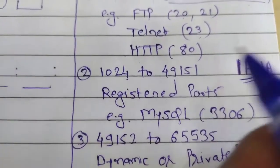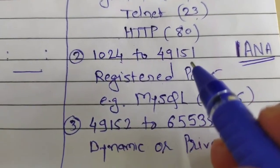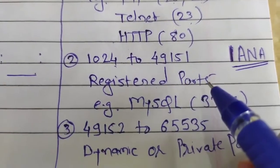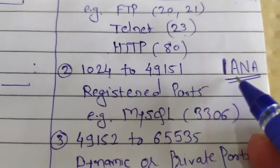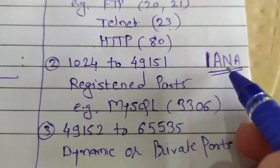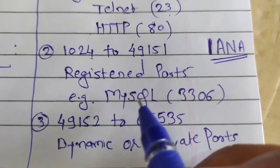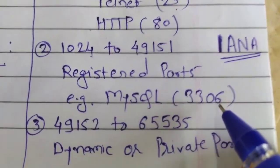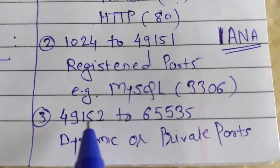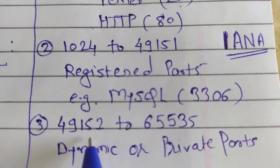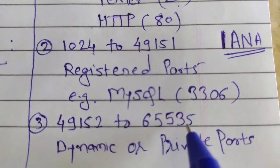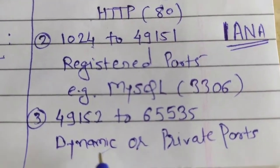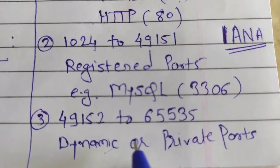Port numbers from 1024 to 49151 are called registered ports — private companies can register these by approaching IANA, the organization that manages port number registration. For example, MySQL has a registered port number of 3306. The third category, port numbers from 49152 to 65535, cannot be registered by any private company — these are called dynamic or private ports, and we can use them for our own applications.